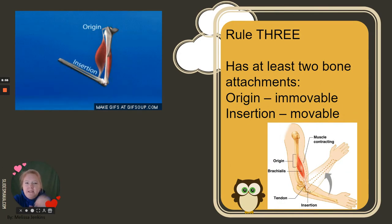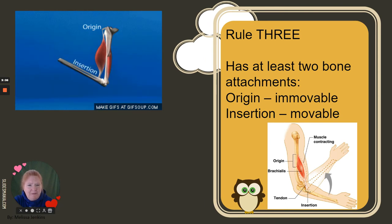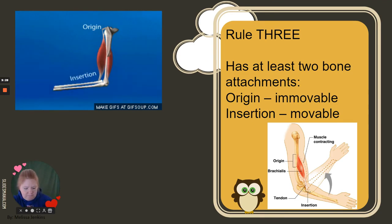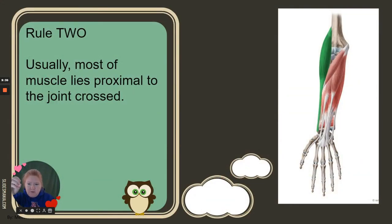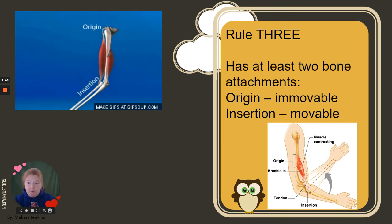The third rule: a muscle has at least two bone attachments — it's got to be attached to at least two bones, otherwise there's no movement. If it's attached to the same bone, nothing moves. The origin is the immovable bone, and the insertion is the movable bone. Based on the animation, the insertion bone moves toward the origin bone. There are at least two attachment points, called the origin and insertion.